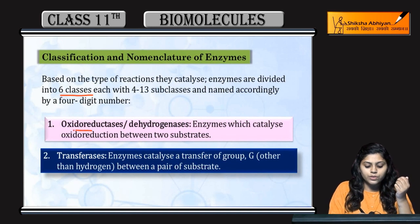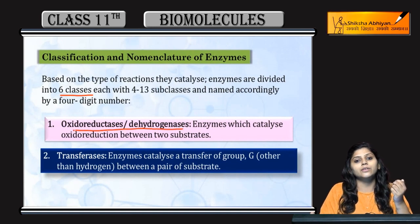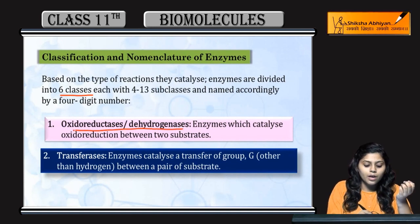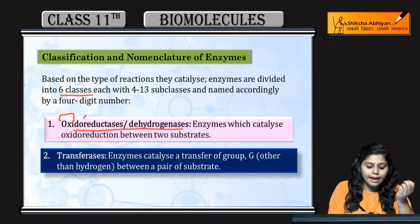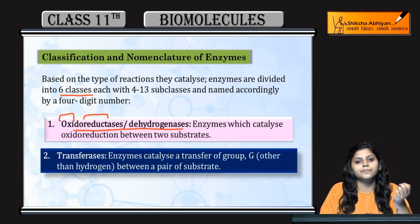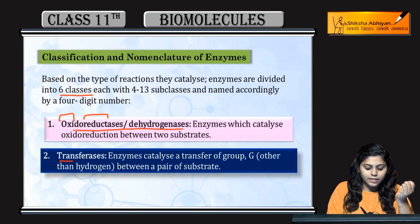First class is Oxidoreductase and Dehydrogenase. What is Oxidation and Reduction? Next is Transferase.